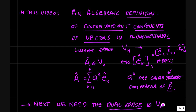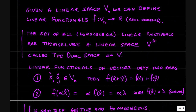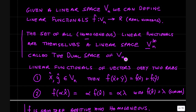Next we're going to need the dual space to v. We talked about linear functionals before — the dual space is the collection of all linear functionals that map elements of v to scalars. The dual space itself is a vector space and it's called vn star. Given a general linear space vn, we can define linear functionals that map vectors in vn to real numbers. The set of all homogeneous linear functionals is itself a linear space, called vn star. It has n dimensions and is called the dual space of vn.